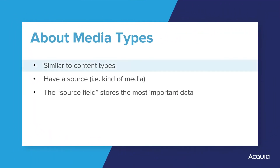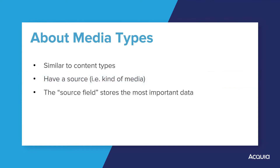In general, things you can do with content types can be done with media types as well. There are some things though that set media types apart. Firstly, they all have what's known as a source. Source is kind of a fancy word for the type of media you're dealing with. Every media type is associated with a source. Every media item also has at least one required field called the source field.